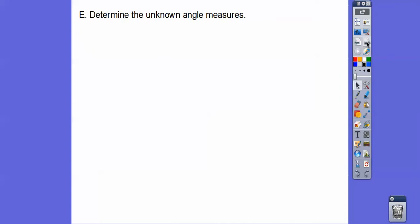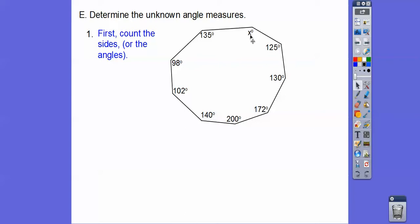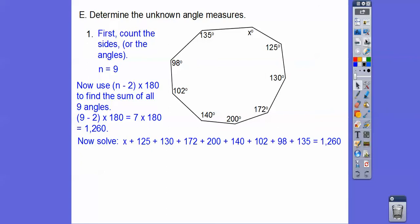Determine the unknown angle measures. We've got to count the sides up, which is the same as the angles, and do n minus 2 times 180. I'll start here and go counter-clockwise: 1, 2, 3, 4, 5, 6, 7, 8, 9. There's nine sides, so n is 9, so we do 9 minus 2 times 180. 9 minus 2 is 7. 7 times 180 is 1,260, so we add all those up and make it equal 1,260. Solve for x, you get x equals 158.